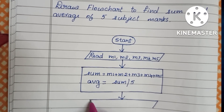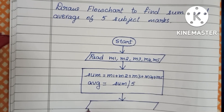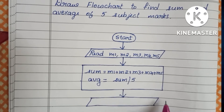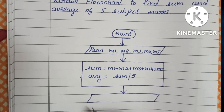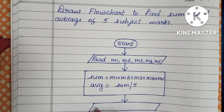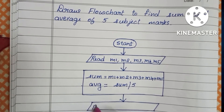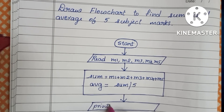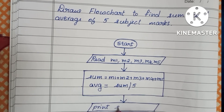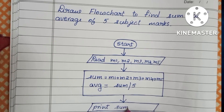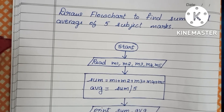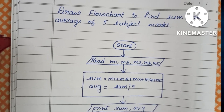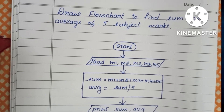The output is sum and average. The output is written within a parallelogram shape. Next we print sum and average.